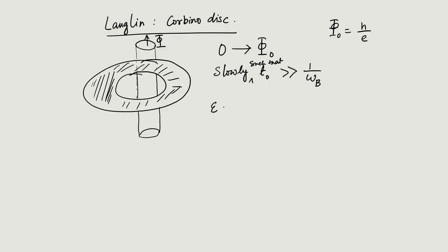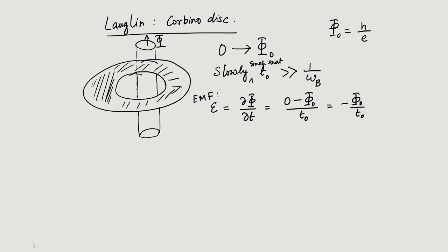This EMF — which is like a voltage — is equal to d(phi)/dt, which over time T_0 gives EMF = phi_0 / T_0. Because of this EMF, there will be a transport of N electrons from the inner edge of the disk to the outer edge, giving rise to a radial current.